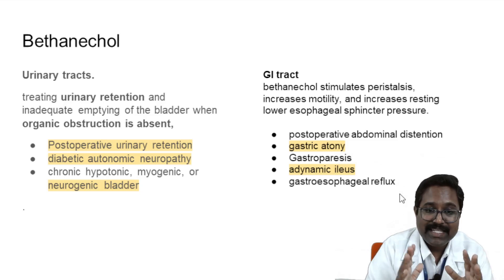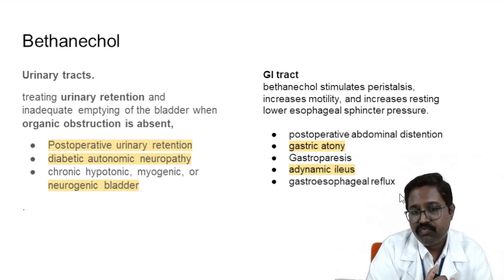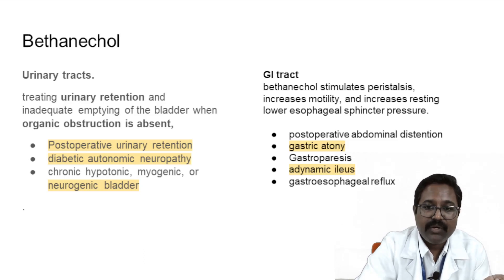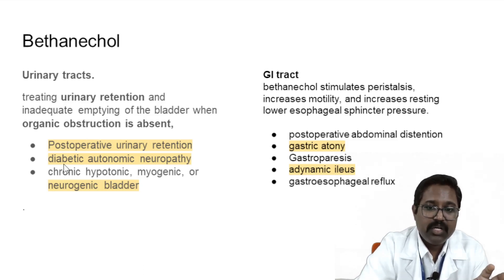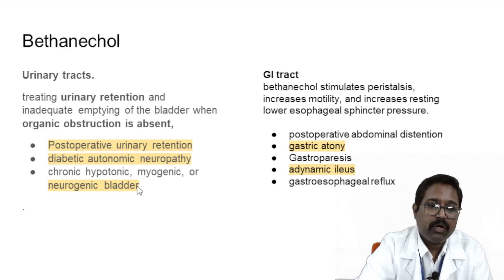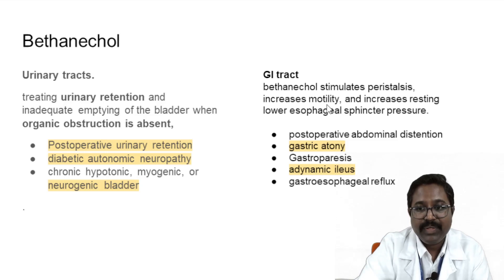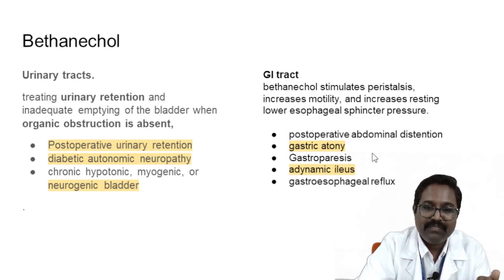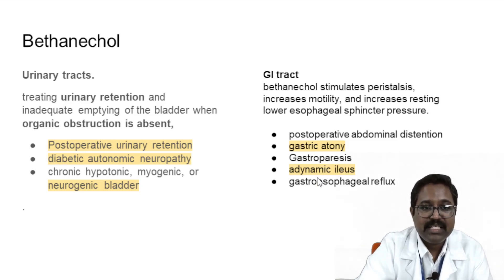Bethanechol — remember B for bladder and B for bowel. It is useful for bladder contraction and bowel contraction. For the bladder (urinary tract), it treats urinary retention and inadequate emptying of the bladder when organic obstruction is absent — useful in postoperative urinary retention, diabetic autonomic neuropathy, and chronic hypotonic, myogenic, or neurogenic bladder. For the bowel, bethanechol increases peristalsis and motility and increases resting lower esophageal sphincter pressure — useful in postoperative abdominal distension, gastric atonia, gastroparesis, paralytic ileus, and gastroesophageal reflux.